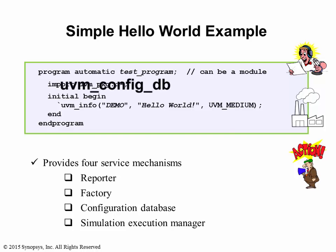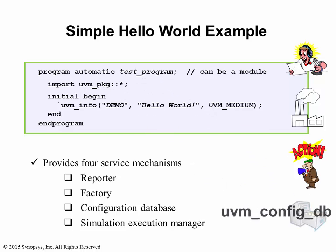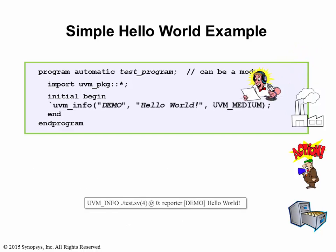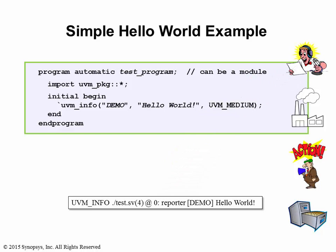The configuration database class name is UVMConfigDB. When you use the `uvm_info macro, you are using the UVMReportServer mechanism. You can use this report mechanism in any code, including RTL, provided that the code has access to the UVM package.